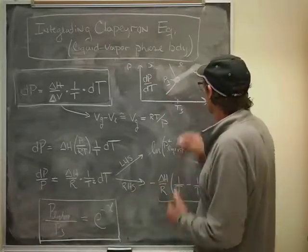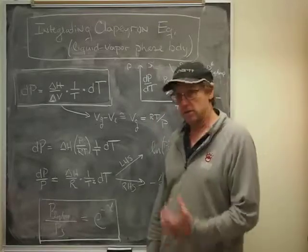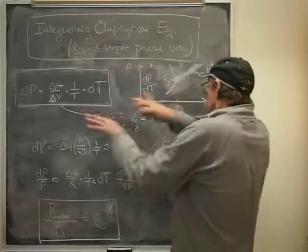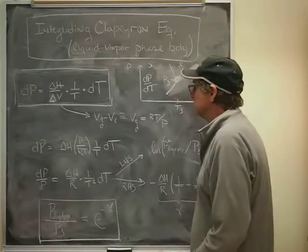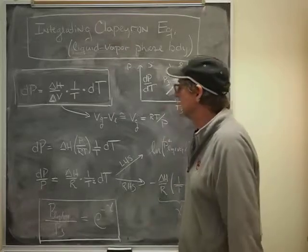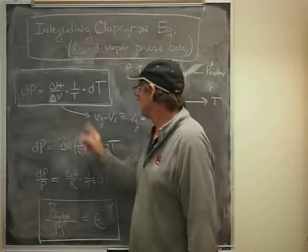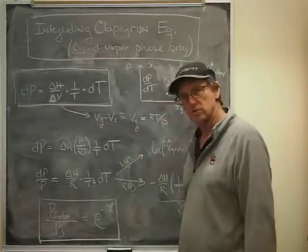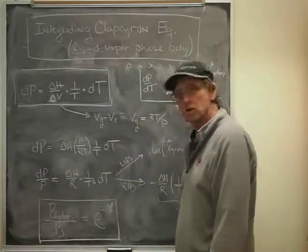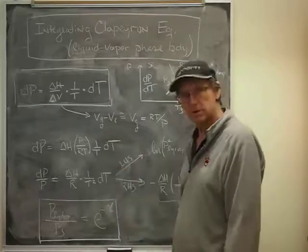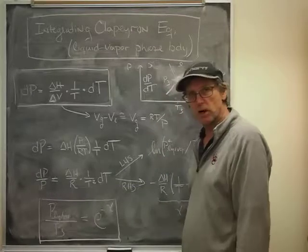One more note here is that if you wanted to get that part of the curve which is the solid-vapor phase boundary, you'll notice that all these considerations were pretty much the same. The only real difference is that if we're talking about that part of the curve, we would be talking about the enthalpy of sublimation, and delta V would be the volume of the gas minus the volume of the solid, which in any case that second volume of the solid is also small compared to the volume of the gas, so those approximations are as valid as what we just derived.